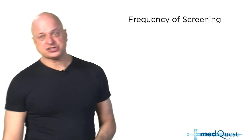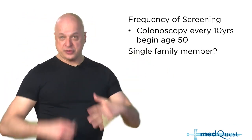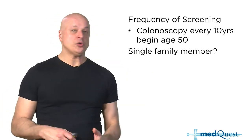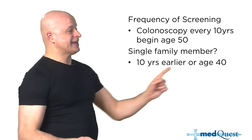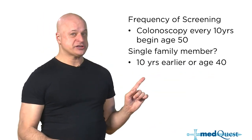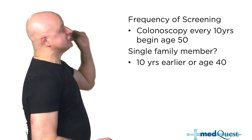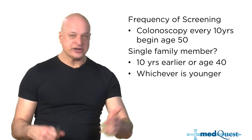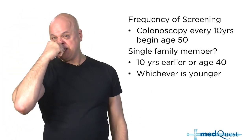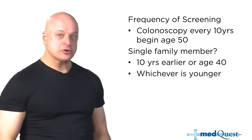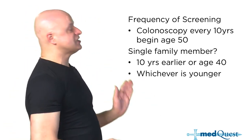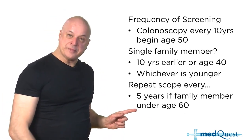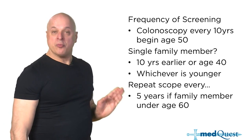In the standard patient, scope every 10 years. But if you have even one family member who had colon cancer — even at age 90 — you start screening at age 40, or 10 years earlier than the age the family member was diagnosed, whichever is younger. So if grandma had colon cancer at 70, you start at 40. If grandpa had it at 60, you still start at 40. Repeat the scope more frequently if the family member had colon cancer young.